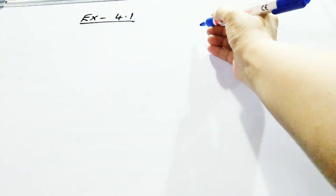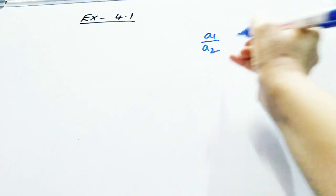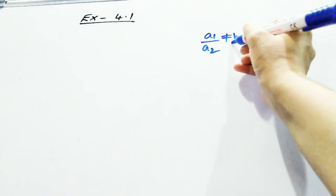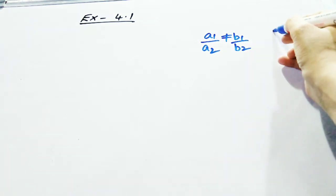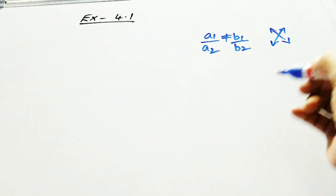What is your first condition? We have discussed that if your coefficient a1 upon a2 is not equal to b1 upon b2, it is an intersecting one.